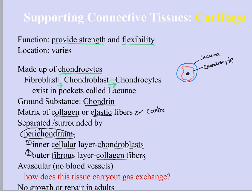All cartilage is avascular, meaning there are no blood vessels in the tissue. Avascular means without blood vessels or without vascularization. But this is living tissue, and living tissue must have some way to carry out gas exchange — bring in oxygen and nutrients, carry out carbon dioxide and waste. The way that occurs is via diffusion. But remember, diffusion is limited by the thickness of the medium. So the thicker cartilage gets, especially once it's fully grown, the more difficult it is for diffusion to occur into the inside of that tissue.